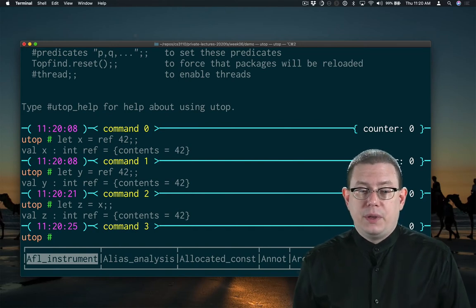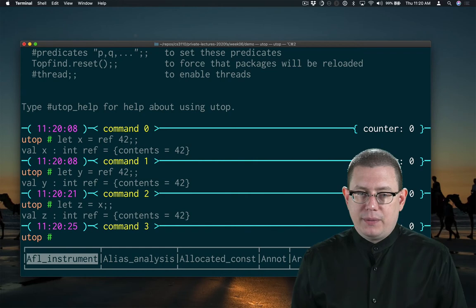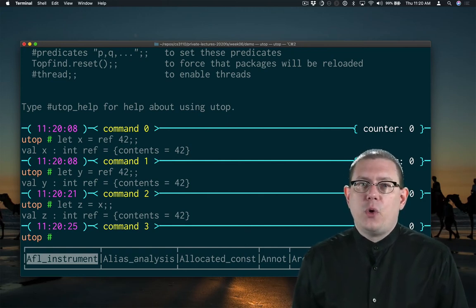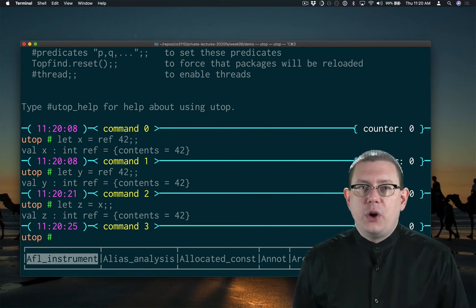So we'll pause here. We've created the two references, bound them to x and to y, and created the alias of z to x. So you can tell that z has contents 42. You can't really tell from what OCaml says that it happens to be an alias for x. There's no way of knowing that from that output.